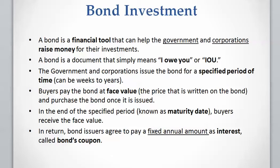The third one is the interest that the issuer of the bond pays to the buyers of the bond, and it is called the bond coupon. It will be paid as a fixed amount — either annually or semi-annually every six months.